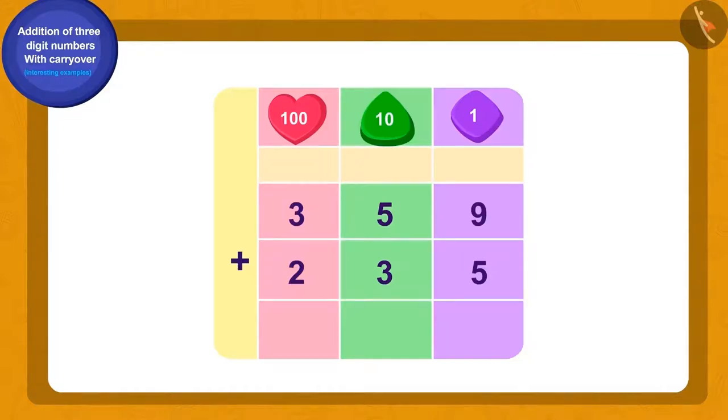What shall we do now? We will add numbers written in place of 1s. Add 9 and 5 and what do we get? 14. How do we write 14 using carryover? Alright, we will write 4 of the number 14 in the 1s place and then carryover 1 to the 10s place like this.